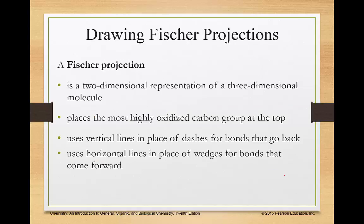Now we're going to move into Fischer projections. And this is very similar to what we saw in the previous section when we were looking at carbohydrates. And I talked about how the double bonded oxygen is always 100% of the time on top. A Fischer projection is a two dimensional representation of a three dimensional molecule. It places the most highly oxidized carbon group on the top, which is why the double bonded oxygen is always on the top. They use vertical lines in place of dashes for the bonds.